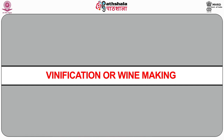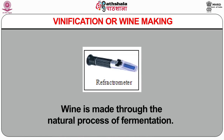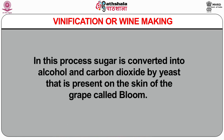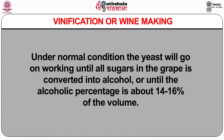We will now discuss vinification, or wine making. Wine is made through the natural process of fermentation, in which sugar is converted into alcohol and carbon dioxide by yeast present on the skin of the grape called bloom. Under normal conditions, the yeast will go on working until all sugar is converted into alcohol or until the alcoholic percentage reaches about 14–16% by volume. It is possible to stop fermentation before all the sugar is used up either by adding alcohol to raise the level to 15%, or by adding sulfur — both of which kill the yeast. These methods are applied to manufacture sweet wines.